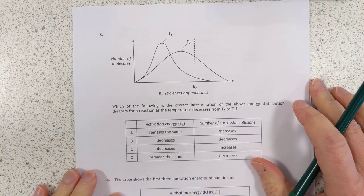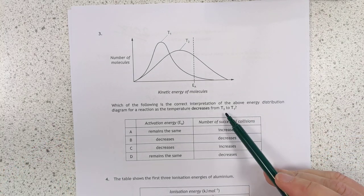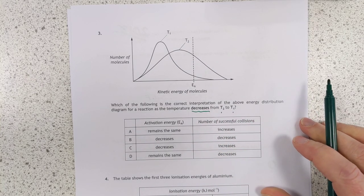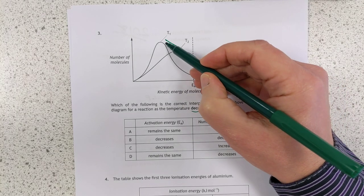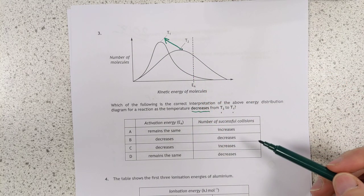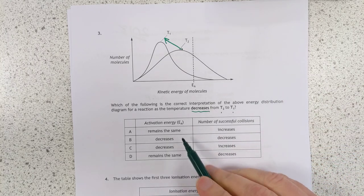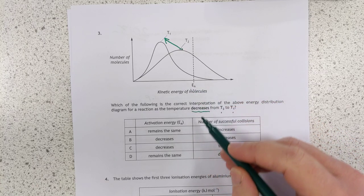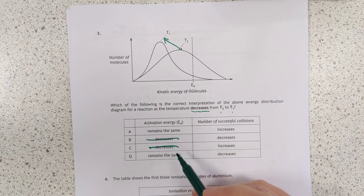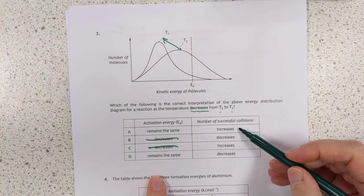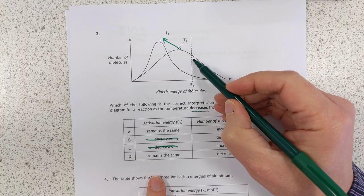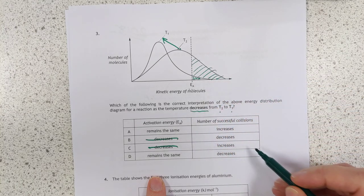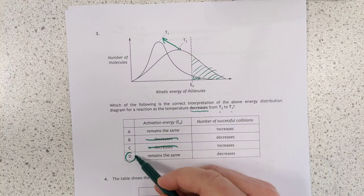Which the following is correct interpretation of the energy distribution diagram for reactions when temperature drops from T2 to T1. So we start here and we're moving to here. The activation energy doesn't change. This is a fixed line. So this remains the same. We can scrub these two answers. What happens to the number of successful collisions? We're cooling things down. So at the start, we've got all these collisions. And afterwards, we've only got these. So the number of successful collisions will decrease. So we're on to D.